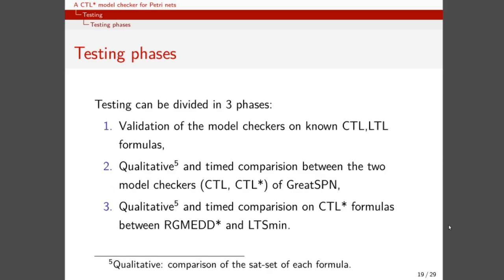We defined three testing phases. The first one is a validation phase in which we compare our results with known results on CTL and LTL formulas. The second one is a comparison between a model checker which is purely CTL and was previously included in GreatSPN, and this CTL-STAR model checker. The third one is a timed comparison over CTL-STAR formulas between our tool and an external tool, which in this case is LTSmin.